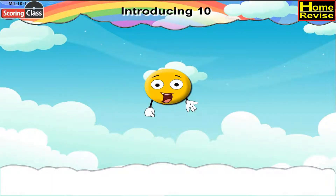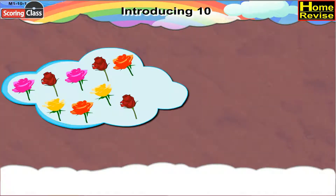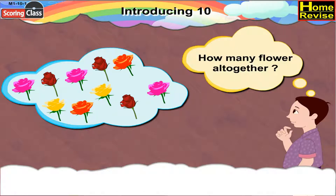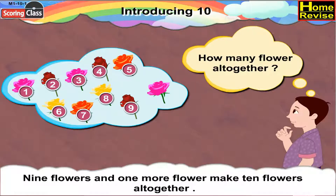Introducing ten. There are nine flowers. If we add one more flower to it, how many flowers will there be altogether? Think, think, come on. Well, if one more flower is added, then nine flowers and one more flower make ten flowers altogether.